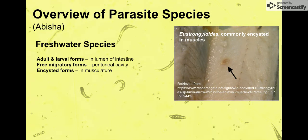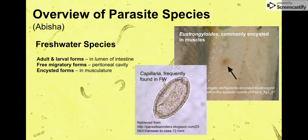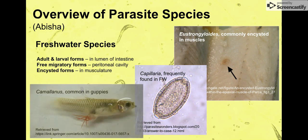Here is an example of Austrologenoloids, which is commonly encysted in the muscle. Here is Capillaria, which Abisha said is frequently found in freshwater. And here is Camallanus, which is very common in guppy species — those little red worms hanging out of that guppy's anus. Bad day for that guppy.